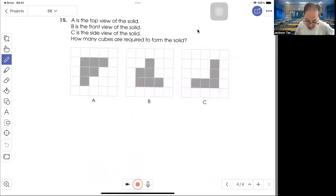Question 15: A is the top view, B is the front view, C is the side view. How many cubes are required to form the solid?